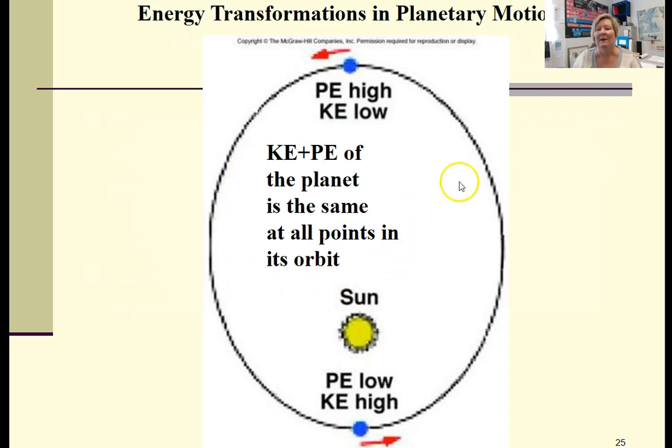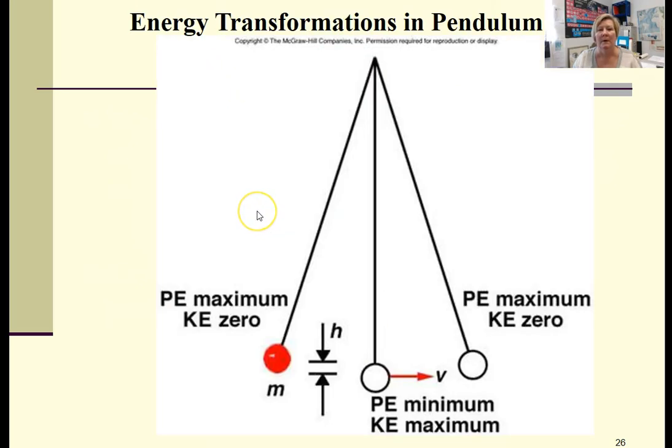And the overall kinetic and potential of the planet is the same no matter where you are in the orbit. A pendulum would be another good example.